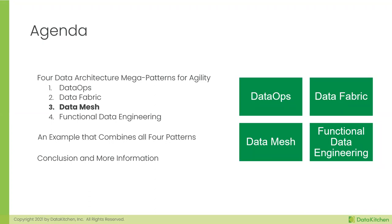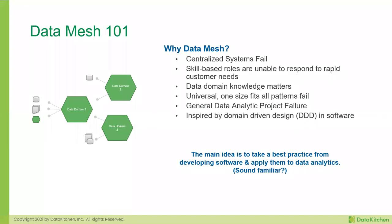The first idea of data mesh is that building analytic systems is hard, complicated, and complex. In general, centralized, complicated systems fail. One pattern of centralization is having too many people work on the same thing at the same time — there's this thing in software, the mythical man-month: you add more people, you get things done more slowly. Another idea is that knowledge of the data and the domain it works in is actually important to the success of teams working together.